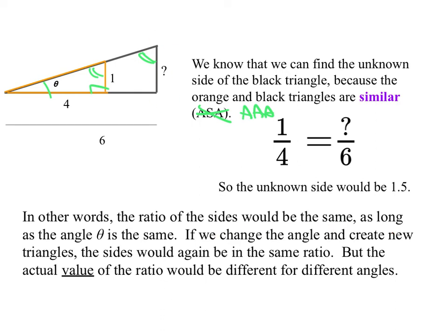Now if we change the angle to create some new triangles, the sides would again have the same ratio to each other, but the value of the ratio would be different for different angles. So you have to be careful what the same means. Here I don't mean the same as this ratio, but that again, the sides of the similar triangles would be in the same ratio, because that's what similar triangles do.